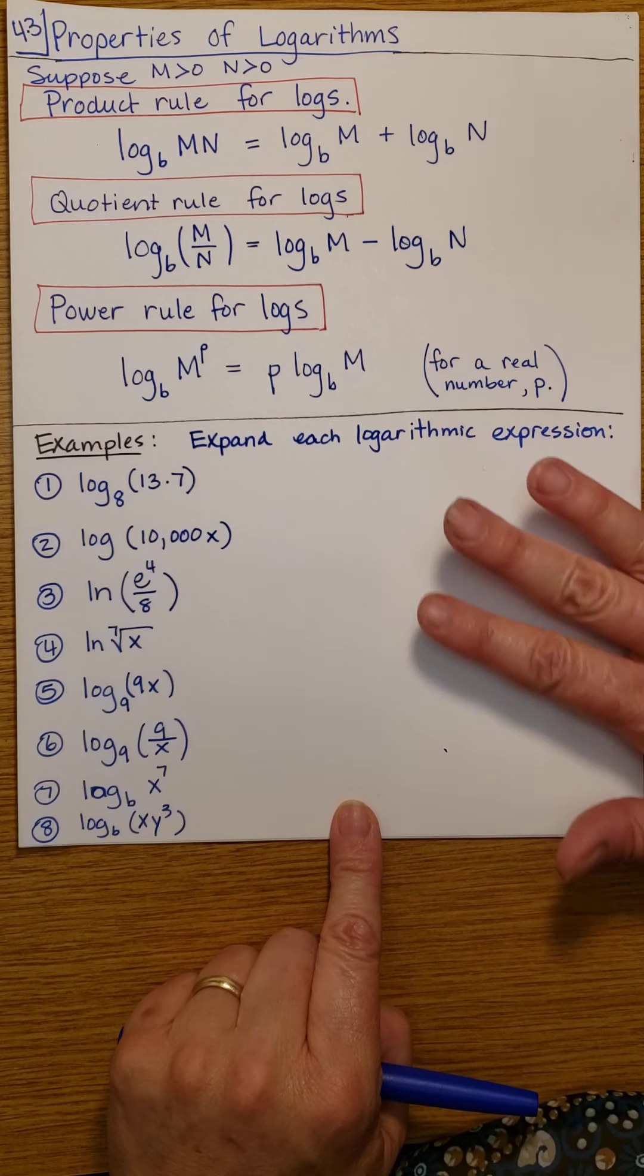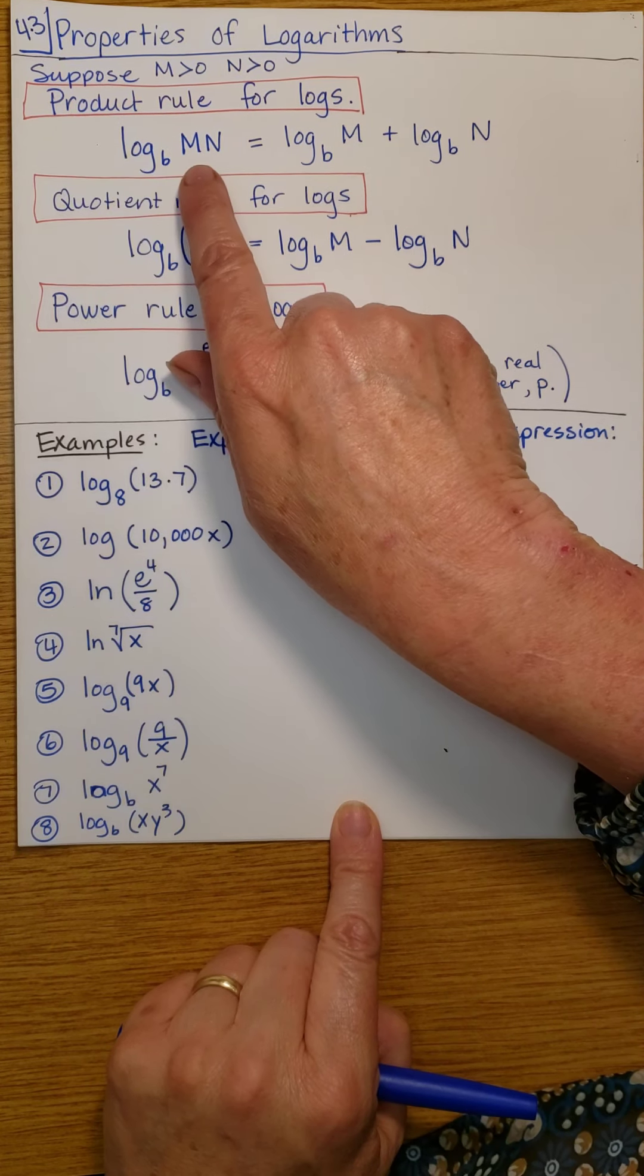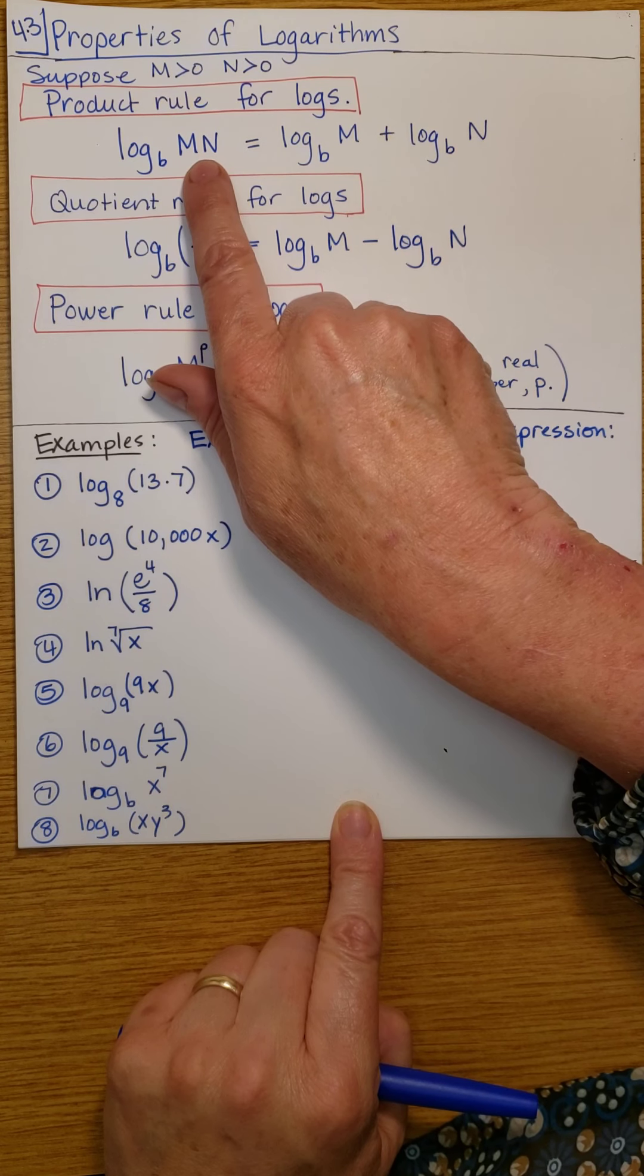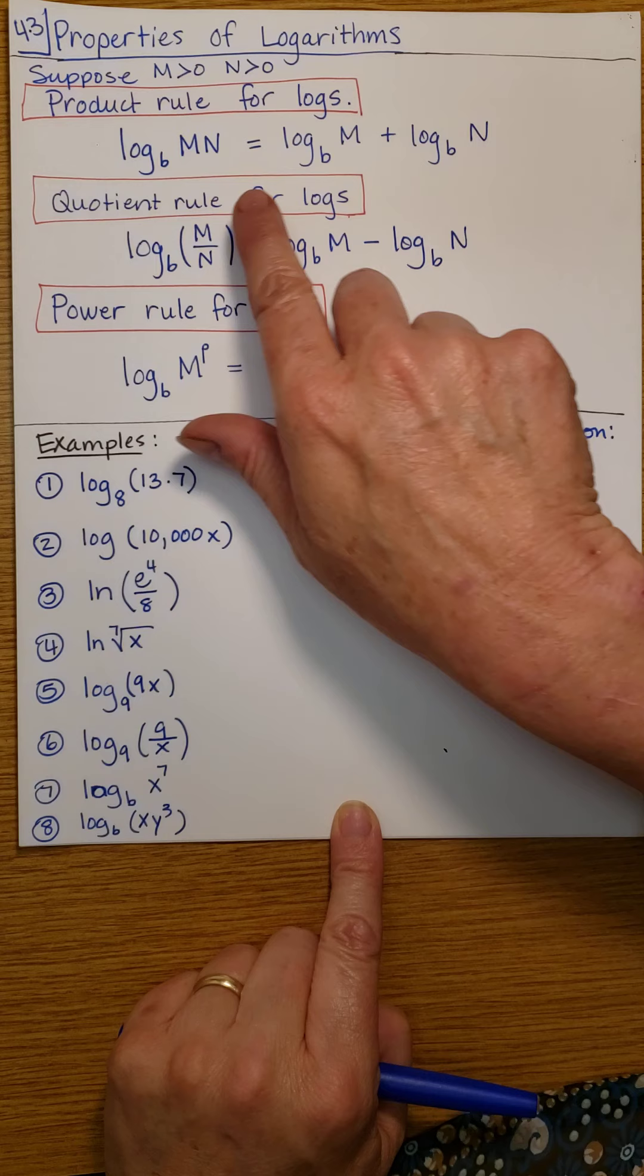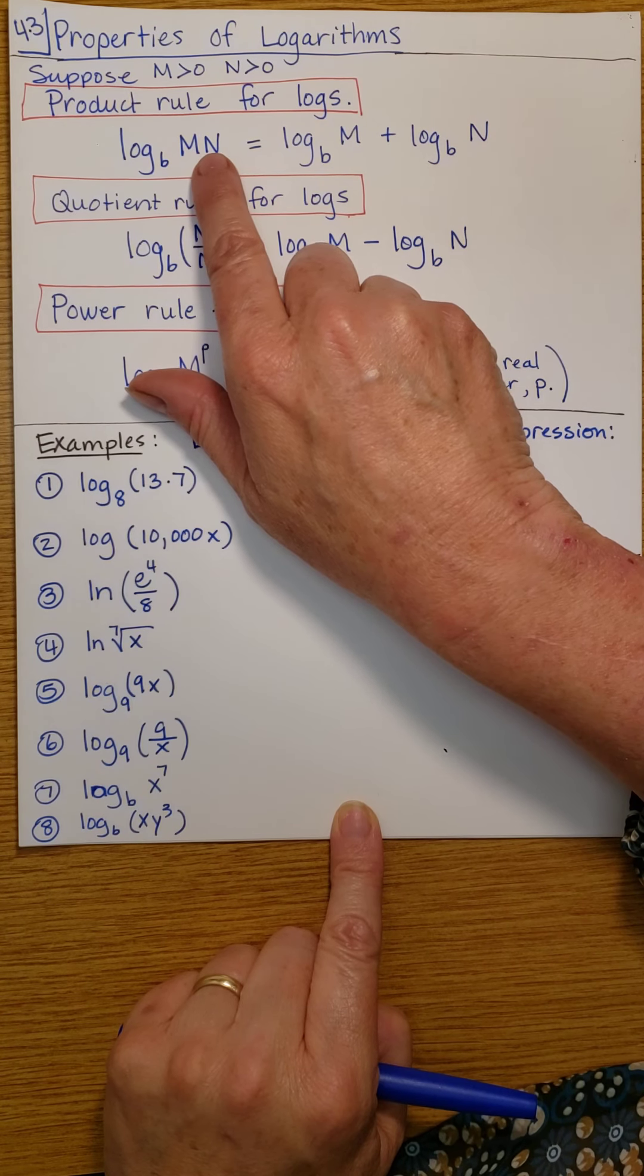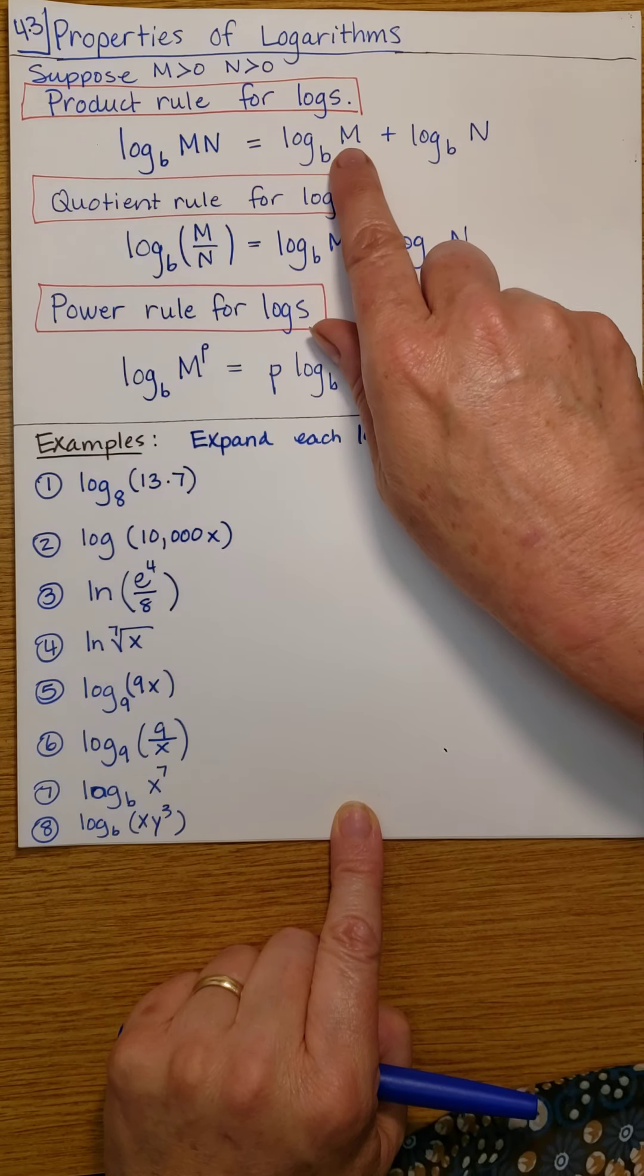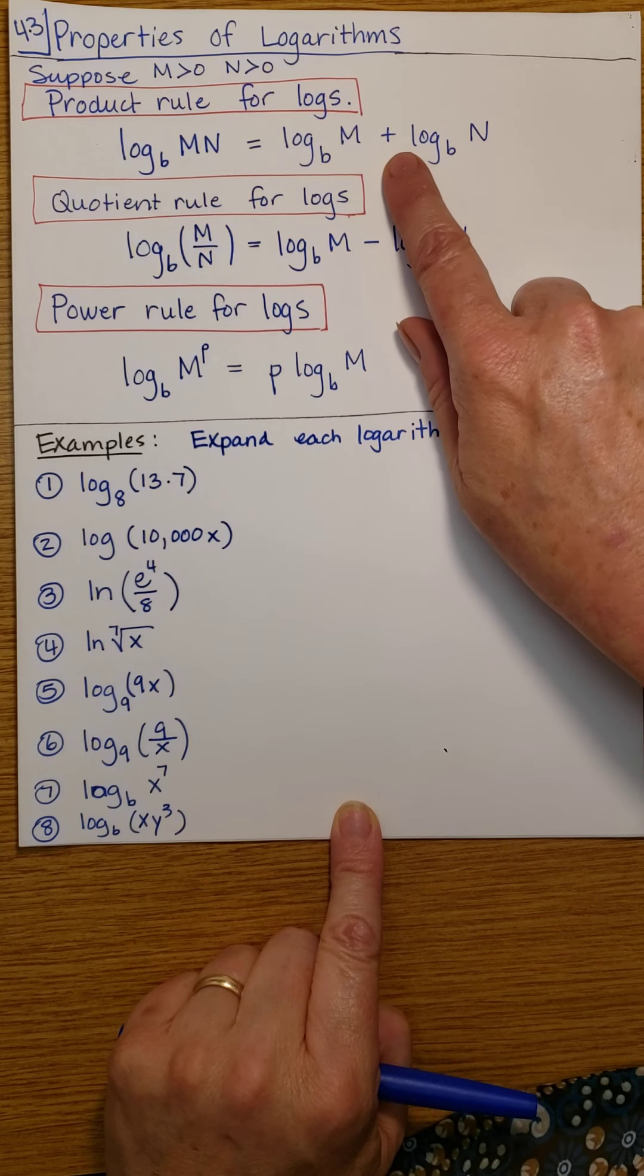So we're going to do some examples. First, let me just say that if you have the product, the log of a product is the sum of the logs. In other words, you can separate this product here and then take the log of each individual term and add them together.